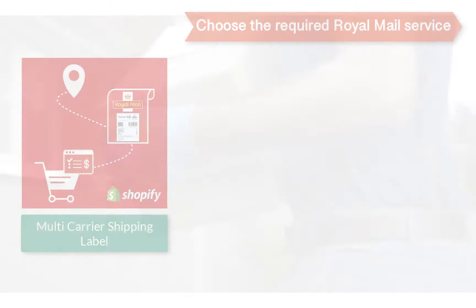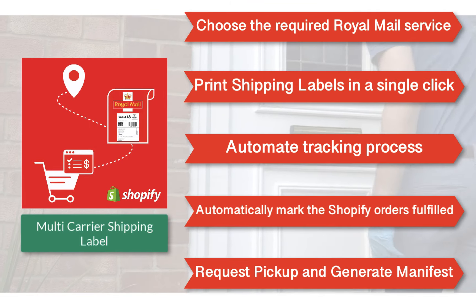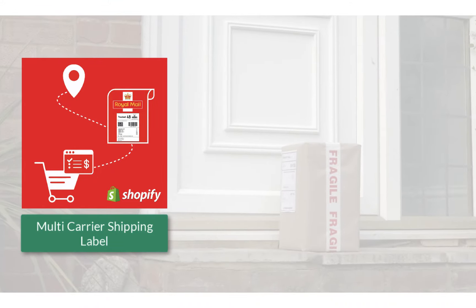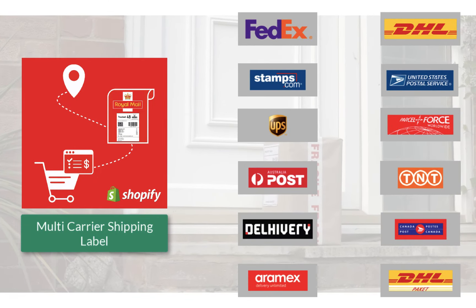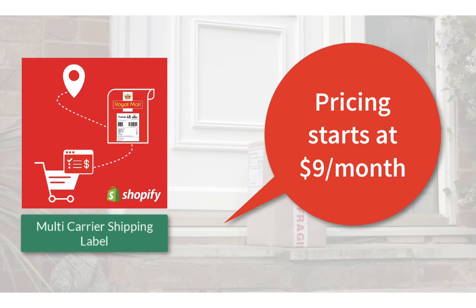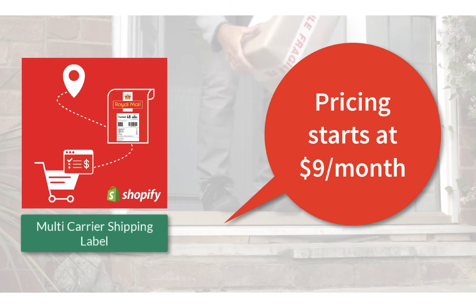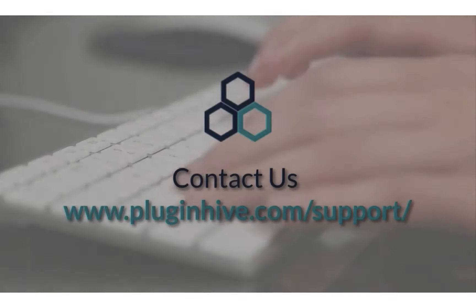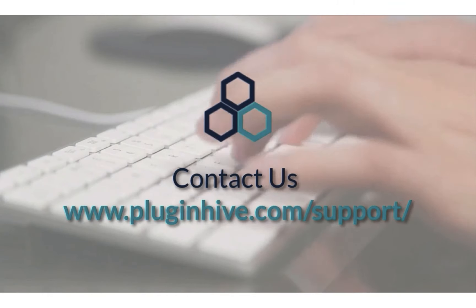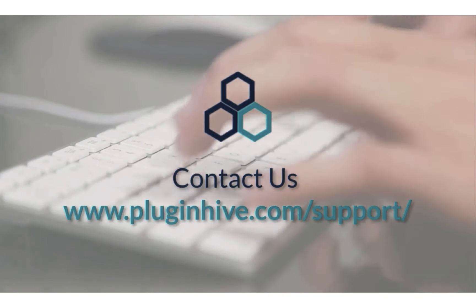With all these features, the multi-carrier shipping label app by PluginHive is the best shipping app for Royal Mail. The app integrates with many other top shipping carriers as well. The complete shipping solution for your Shopify store starts at $9 per month. If you have any queries or require any assistance in setting up the app, please reach out at PluginHive.com/support.